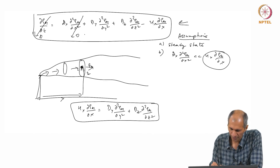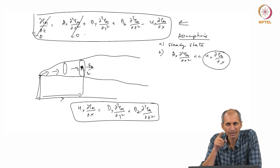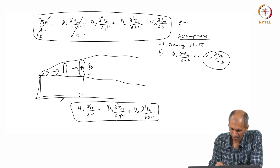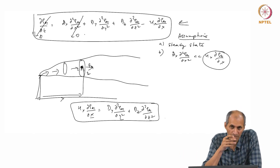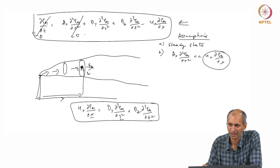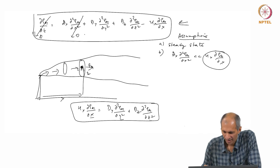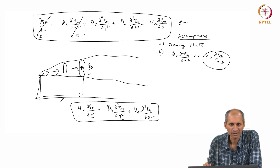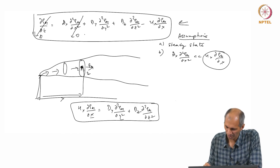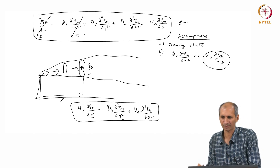The equation now becomes: u_x times d(rho_A1)/dx equals d_y times d²(rho_A1)/dy² plus d_z times d²(rho_A1)/dz². This is the steady-state equation we need to solve. This equation needs boundary conditions — three boundary conditions corresponding to x, y, and z are needed. This is a second-order equation. From here, the derivation of what we call the Gaussian dispersion model requires a bit more work.